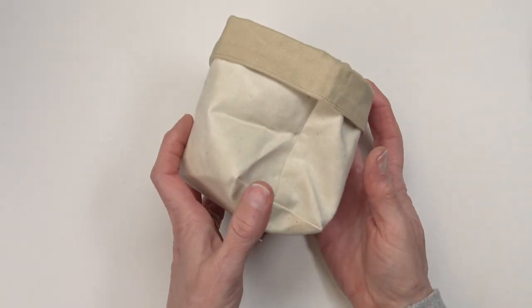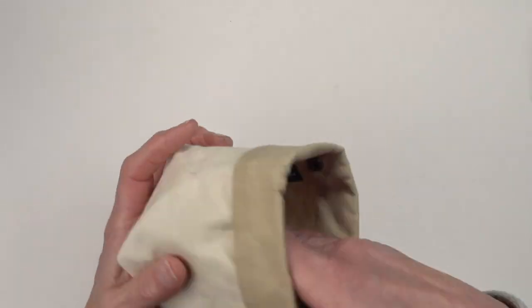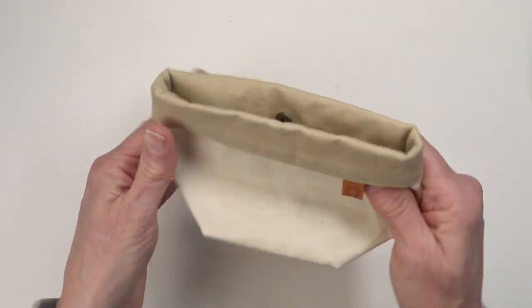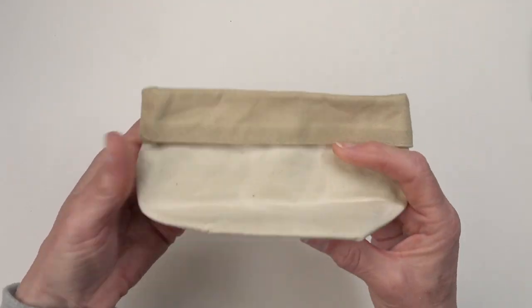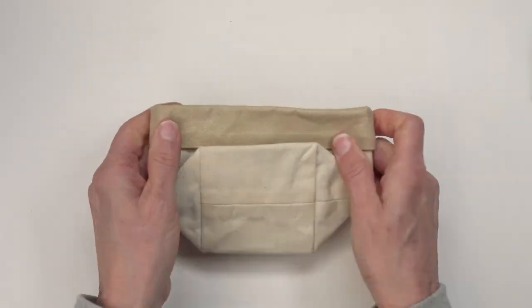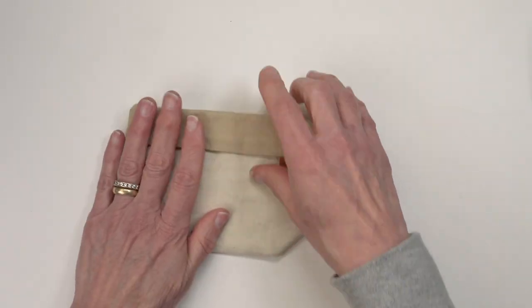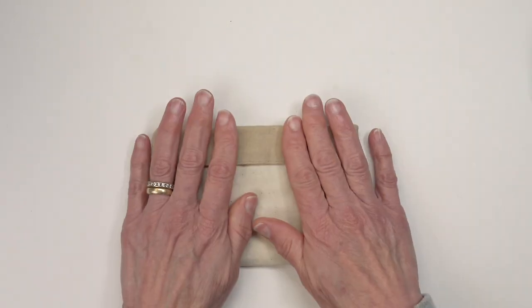For storage you can empty out the bin and flatten it back out. One side is slightly more creased than the other and it will fold nice and flat. You can snap the closure or not.